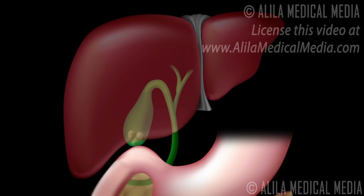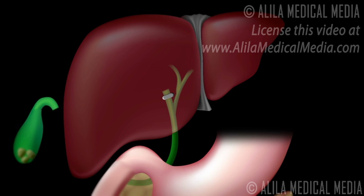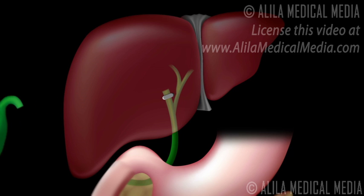The cystic duct and cystic artery are clipped with tiny titanium clips and cut. The gallbladder is then dissected and removed through one of the incisions. After surgery, bile enters the intestine without being concentrated in the gallbladder, and may not be sufficient after a high-fat meal. A low-fat diet is therefore recommended after removal of the gallbladder.